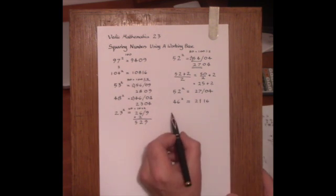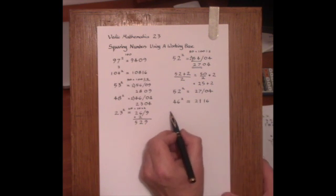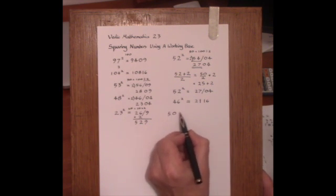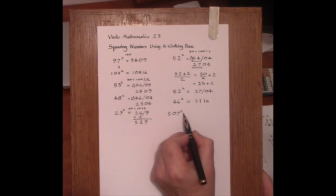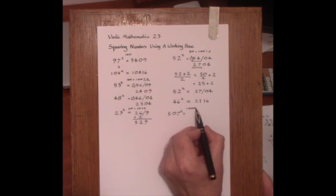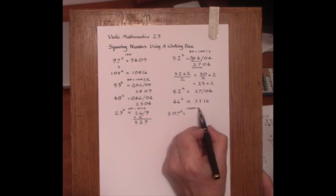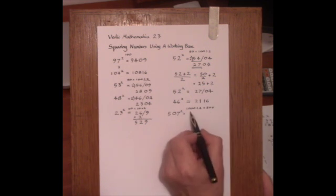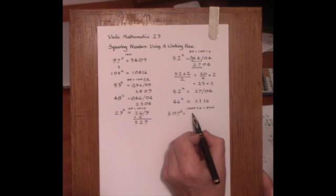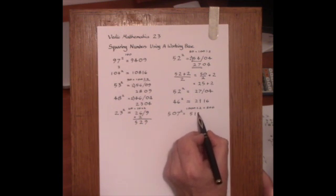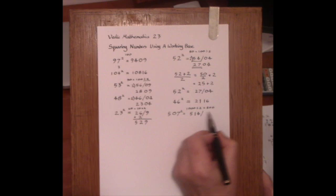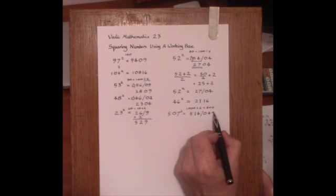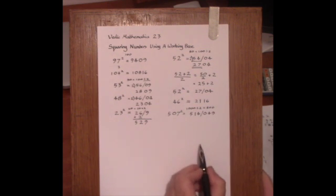Now, let's look at a larger case of 507 squared. Well here we can take 1000 as the working, as the real base, and 1000 divided by 2 is 500. So we increase 507 by 7, giving 514, and on the right we'll have 049, three digits because there are three zeros in 1000.